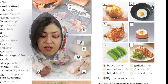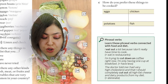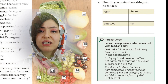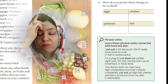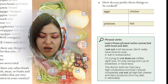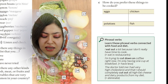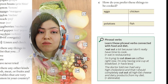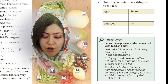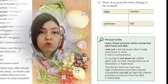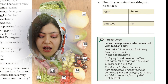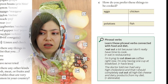Now let's go to phrasal verbs. There is a box here teaching phrasal verbs connected with food and diet. The first is 'eat out' — I eat out a lot because I don't have enough time to cook. Eat out means to eat in restaurants. The opposite is 'eat in,' which means eat at home.